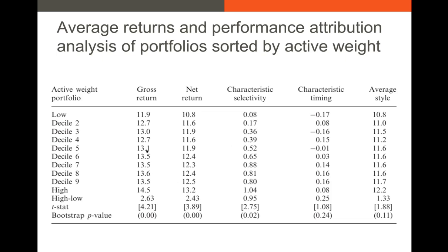What these researchers find is something kind of counter to what Fama and French actually find. They do find that if you sort based on active portfolio management — not just the fees or the actual performance, but rather the percentage of the portfolio that is different from the benchmark — the funds that are more actively managed do actually offer higher performance. No one really has the ability to time the market; it's just that the fund managers that are more actively managing appear to have better selectivity ability.